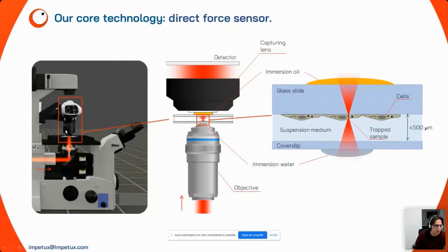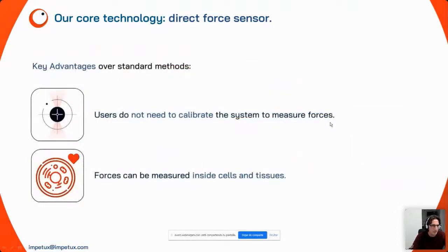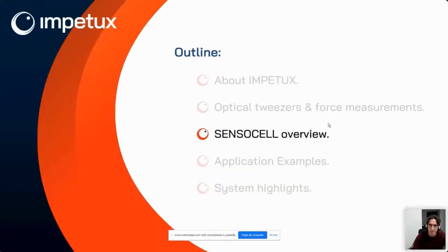All transmitted light is captured by our first sensor using a condenser lens, and the light is brought to our detector at the back focal plane. This detector analyzes the light patterns, giving a direct measurement of changes in light momentum and therefore a direct measurement of force on the trapped object. The key message is that users never need to calibrate to measure forces, and these forces can be measured inside cells and tissues.